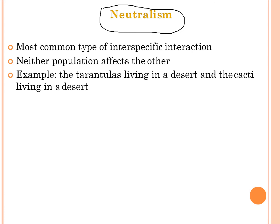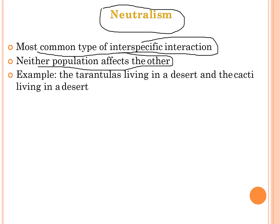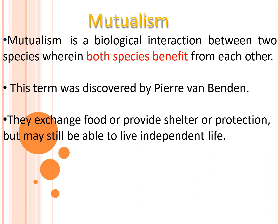Neutralism is the most common type of inter-specific interaction and is a positive interaction. It is inter-specific, meaning it occurs between species, but neither population affects the other. Examples include tarantulas living in the desert and cacti living in the desert — these do not affect any other organisms and stay in their own place.